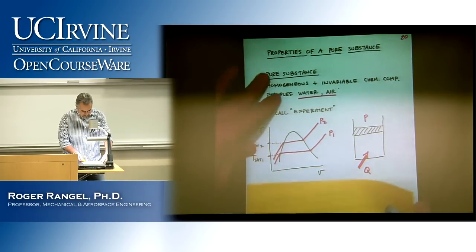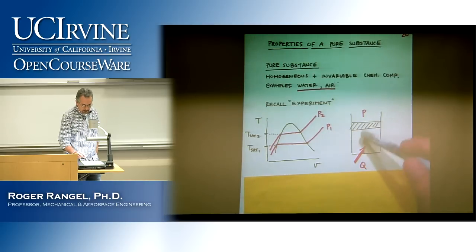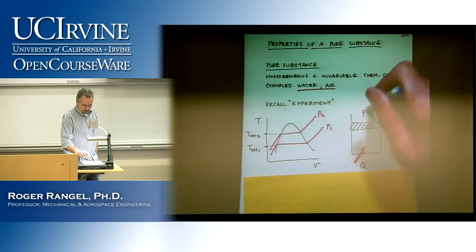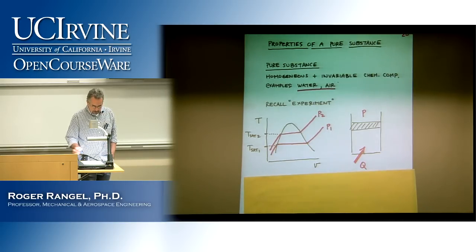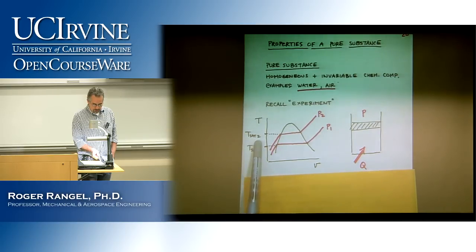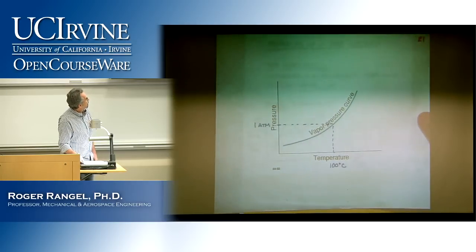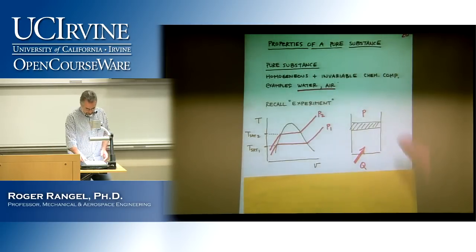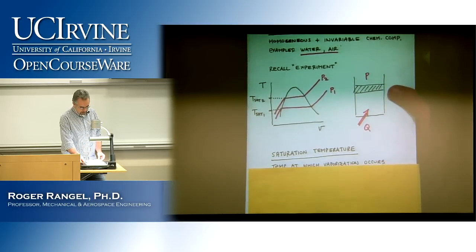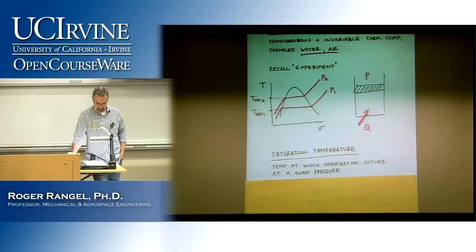Here is a little summary of our experiment. We had the pure substance in the cylinder, we added heat to it, and we controlled the outside pressure P. Shown here are two examples: one at low pressure P₁ and another at high pressure P₂. There is a saturation temperature T_sat corresponding to P₁, and a saturation temperature T_sat₂ corresponding to P₂ — reiterating that I can always link a pressure to a saturation temperature. Saturation temperature is the temperature at which vaporization occurs at a given pressure. At 1 atmosphere, the saturation temperature is 100°C.